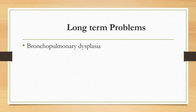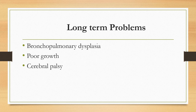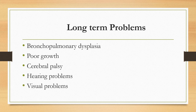Long-term complications include chronic lung disease or bronchopulmonary dysplasia related to surfactant deficiency, poor growth due to feeding difficulties, and cerebral palsy from hypoxia, ischemia, or intraventricular hemorrhage. Hearing problems may result from prematurity itself, congenital infections, or ototoxic drugs. Even without overt cerebral palsy, some babies develop behavioral issues or developmental delays. Retinopathy of prematurity remains a concern.